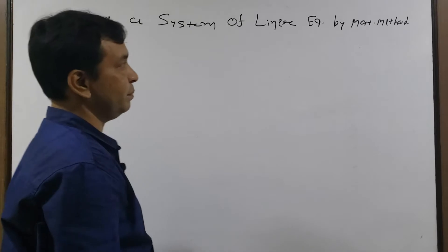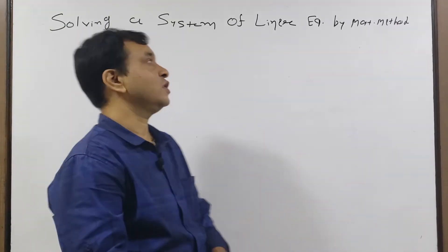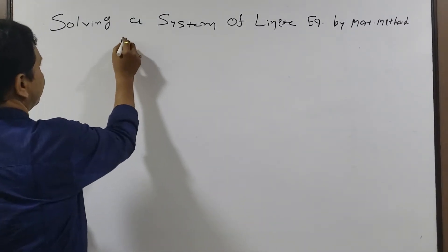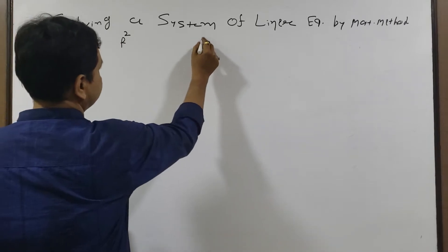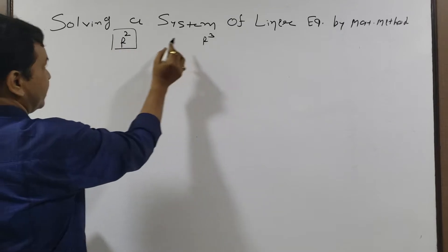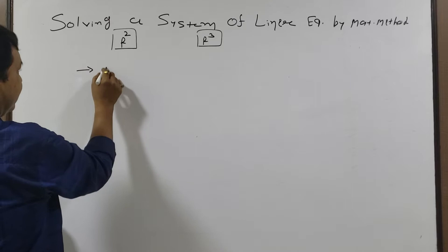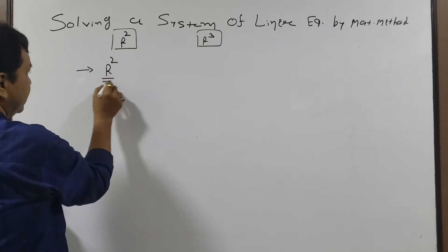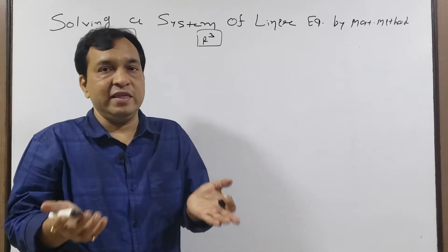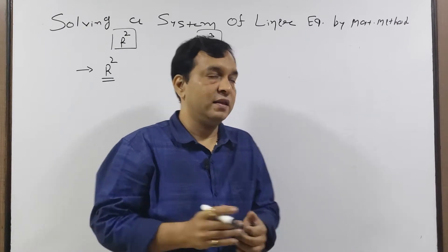Solving a system of linear equations by matrix method. Dear students, there are two types of equations. We know very well for R2 and R3. First we are solving the method for R2 and then after we are solving the method for R3. When we are solving this method for R2, we know very well we have minimum two equations.